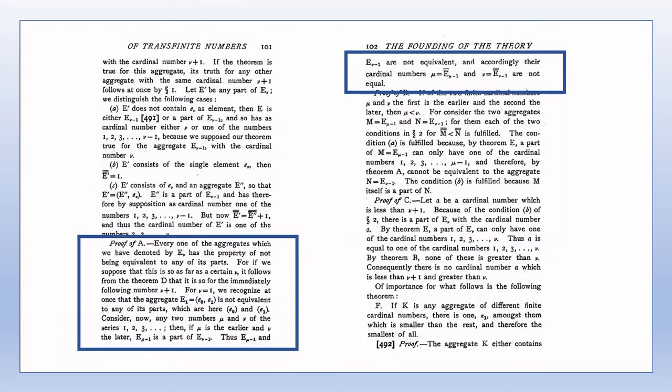The proof of theorem A requires a bit of care. The first part of the proof is based on an induction argument. That is the statement, every one of the aggregates which we have denoted by E sub nu has the property of not being equivalent to any of its parts is proved by an induction argument. This part of the proof is relatively straightforward. But then we come to the part which says, consider two numbers, mu and nu of the series of finite cardinal numbers.